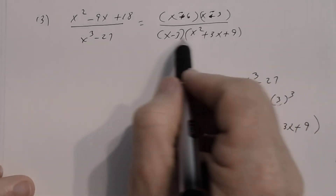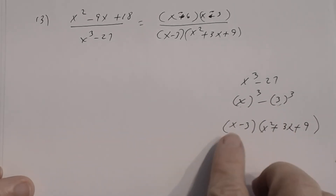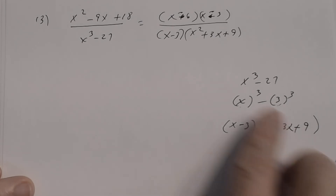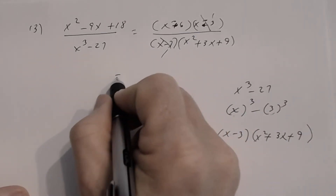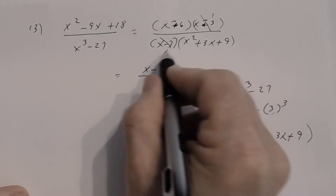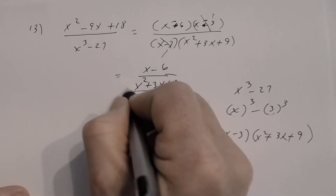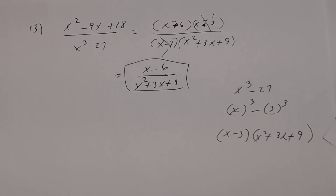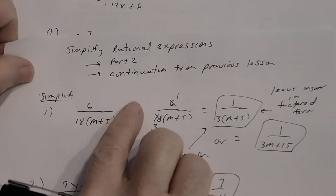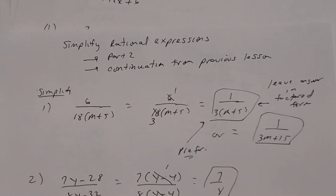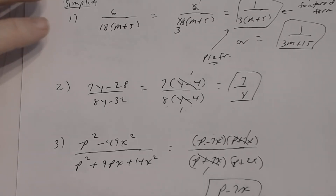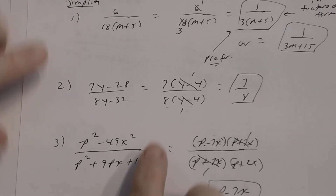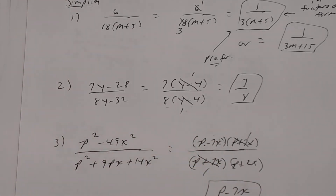Reduce: (x − 3) appears in both numerator and denominator and divides out. That's the only common factor. The answer is (x − 6) divided by (x² + 3x + 9). In this lesson we continued with part two — you now have about 12 problems from each part. This topic will be important for the next lesson on multiplying and dividing rational expressions.